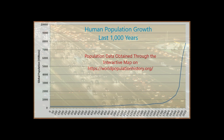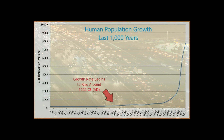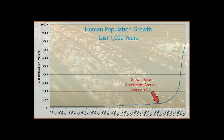Let's take a look at the last 1,000 years of human population growth. All population data was obtained through the interactive map on worldpopulationhistory.org. Notice the y-axis — global population is in millions. Human population growth rate remained fairly constant until around 1,000 AD. By 1700, the population growth rate increases even more dramatically. Until today, we're currently at 7.8 billion on the planet.